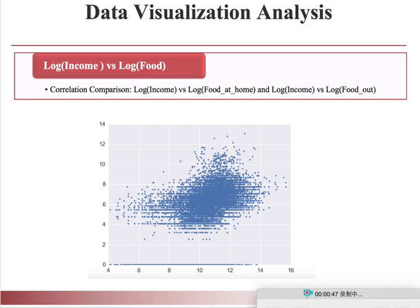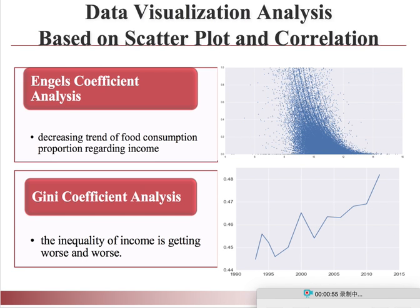Then we did visualization analysis. First, we tried a scatter plot of log income versus log food, which shows a correlation pattern. Second, we plotted the Engel's coefficient, which shows that when income rises, the proportion of income spent on food decreases.